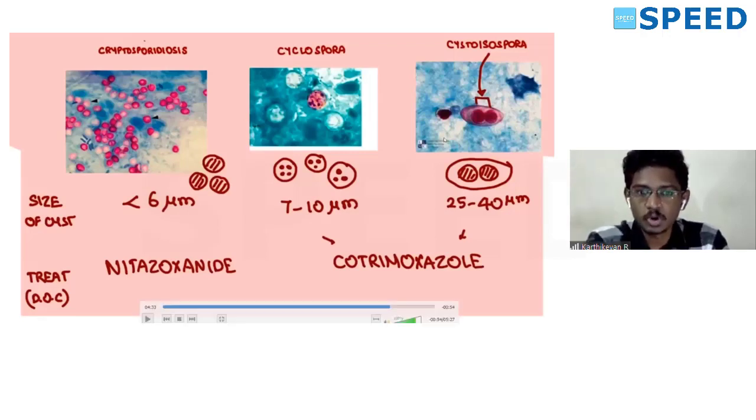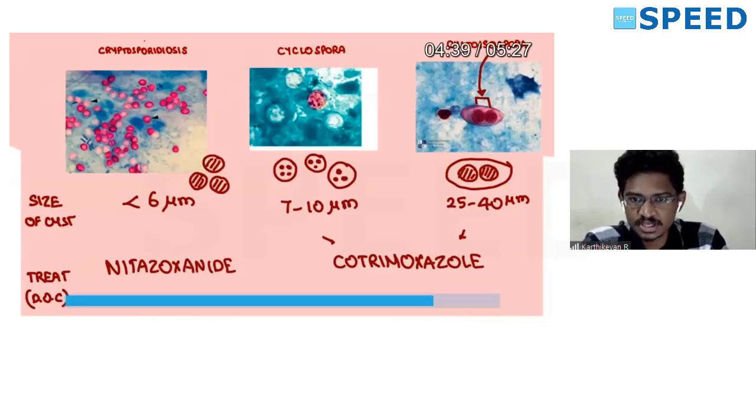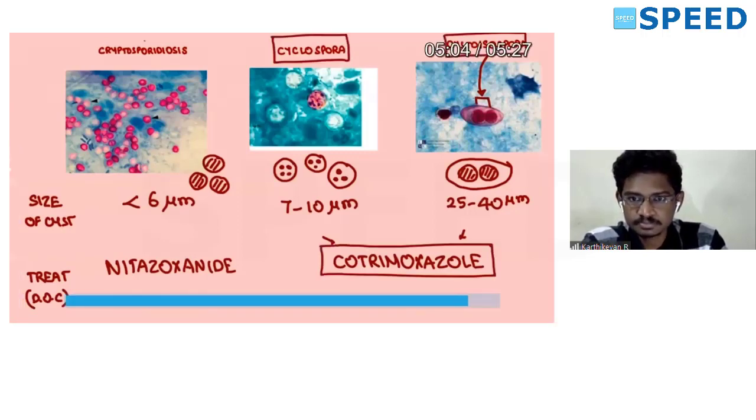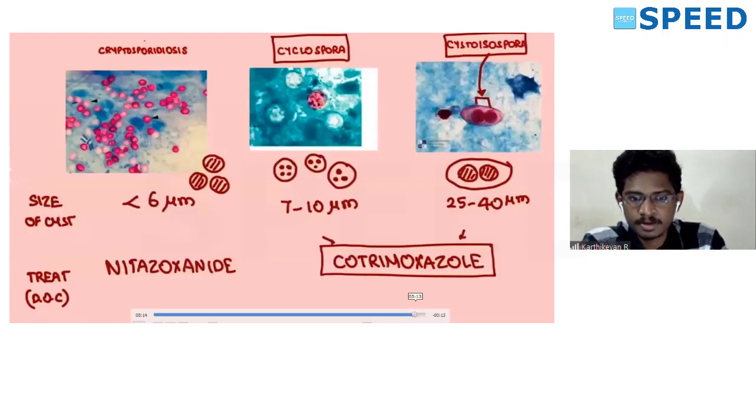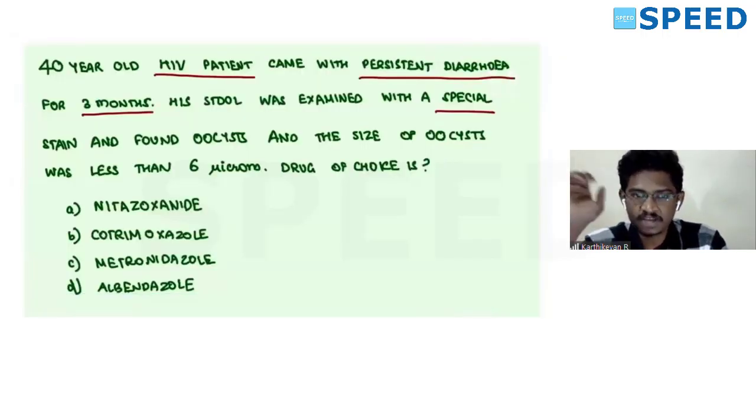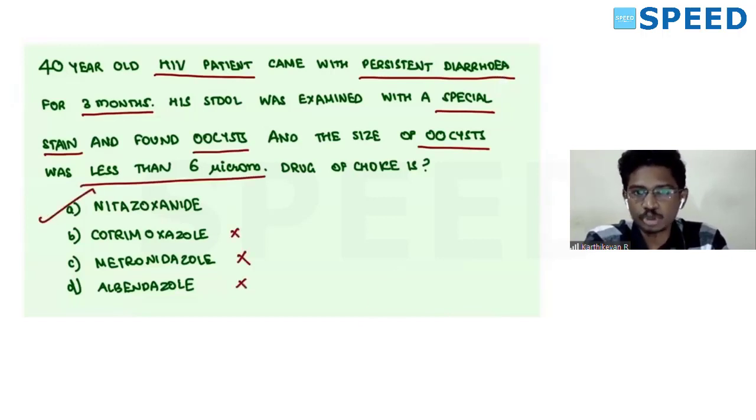This is most important. So this carries the importance in this question. If you see in this question, they have given a 40-year-old HIV patient with persistent diarrhea for 3 months. Stool examination special stain which is Kinyon's acid-fast stain. And they found oocysts. Size of oocyst was less than 6 microns, which means it is the smallest of the cysts, it is cryptosporidiosis. Drug of choice is nitazoxanide. Never forget this. And other two if they give, it will be cotrimoxazole.